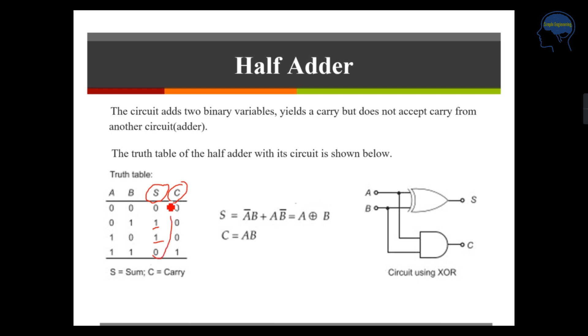If you take the sum, you can see that two bits are 1. Its corresponding input is 0, 1 and 1, 0. Your sum will be A bar B plus A B bar. Your sum will be A XOR B and if you take the carry, you have only one bit as 1 which is A and B. Your carry will be A AND B.